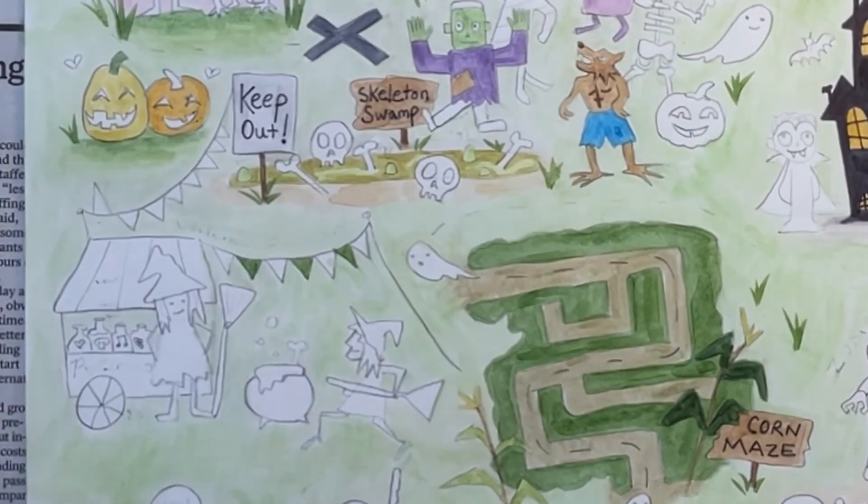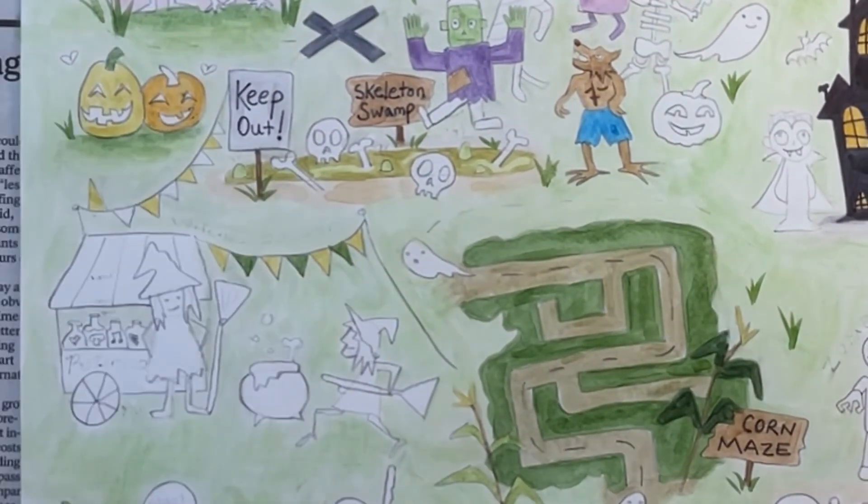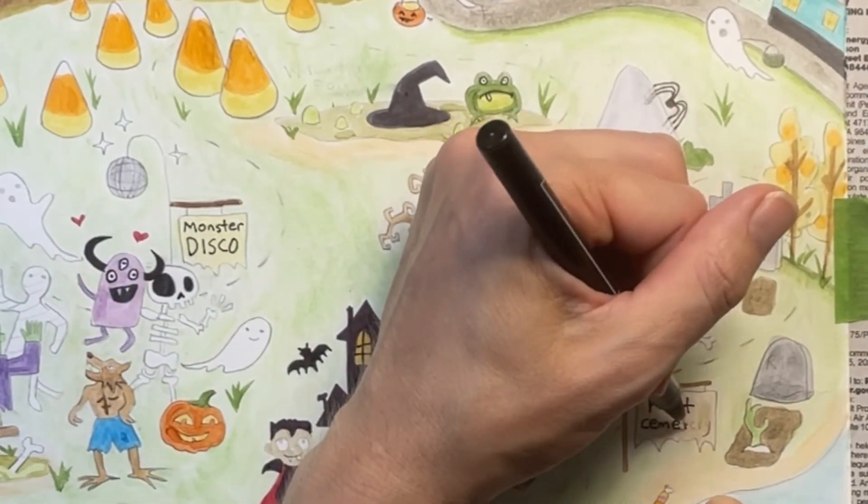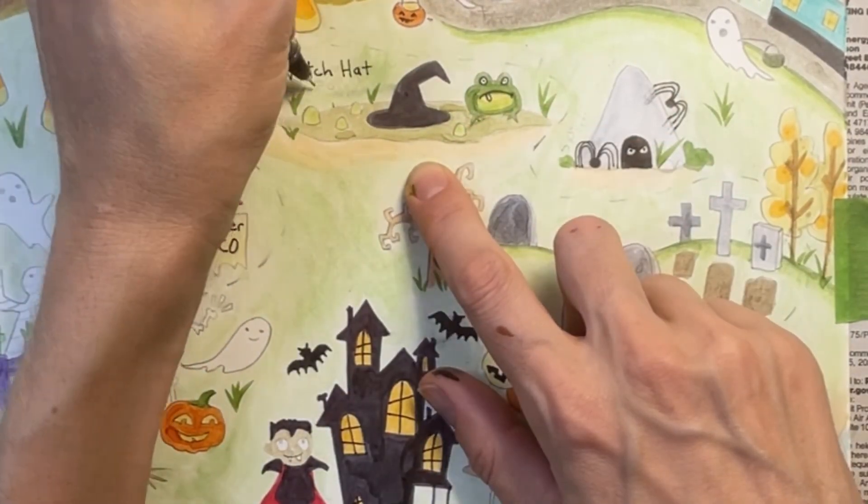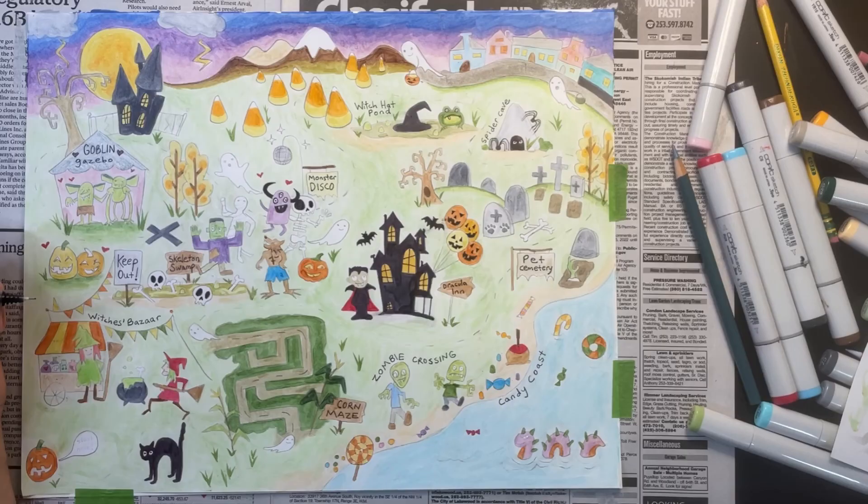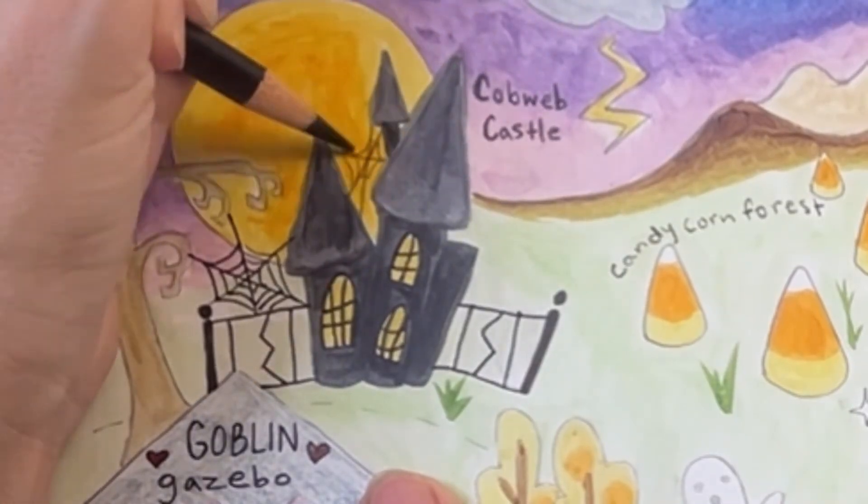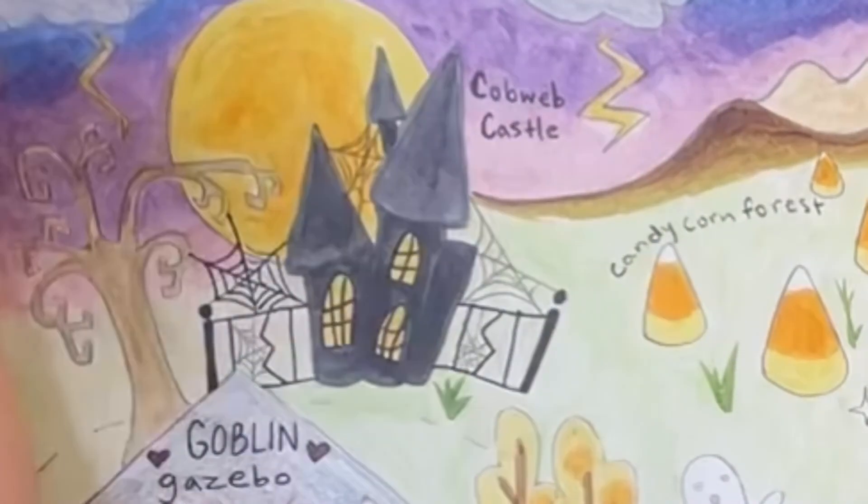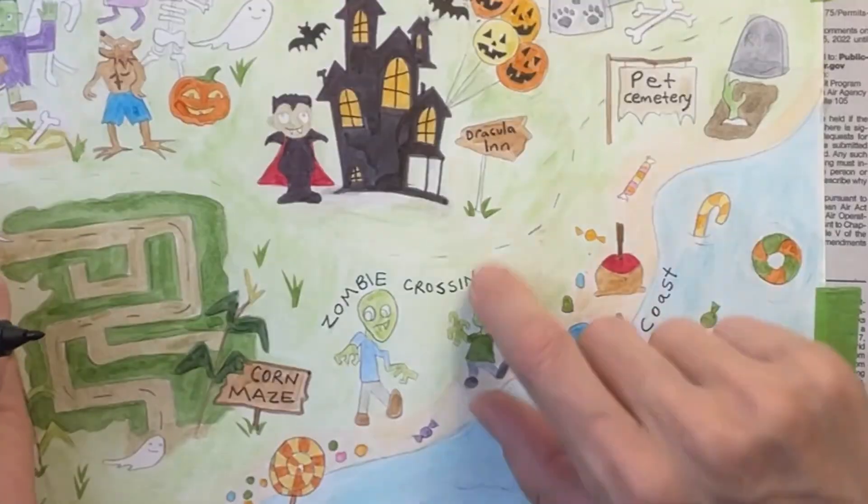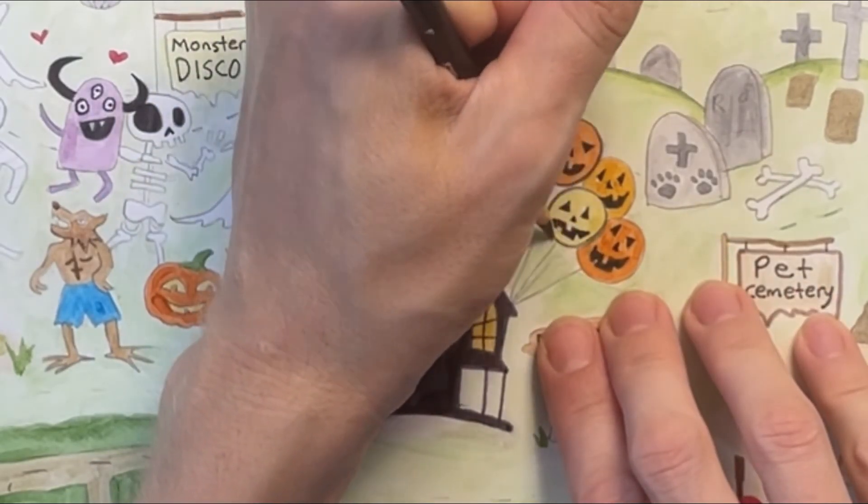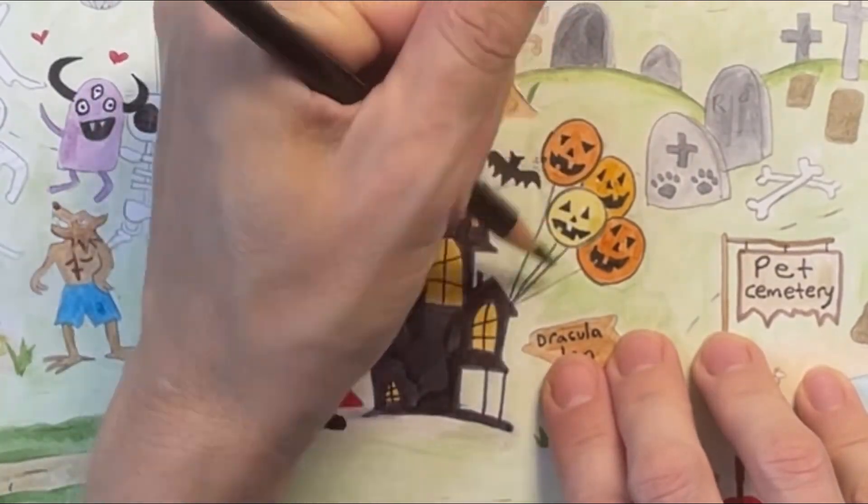I'm using Halloween colors to color in the flags for my witches bazaar, and you can see that I'm using an ultra fine Sharpie to relabel the different parts of my map so I can see them better. I am now adding some cobwebs and spider webs to my Cobweb Castle. Notice how I'm using an ultra fine Sharpie to outline different parts of my map. This is a great way to make the images in your map really pop out. You might also try using a black colored pencil for this. It works really well.